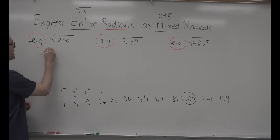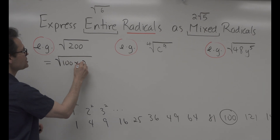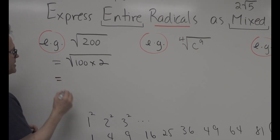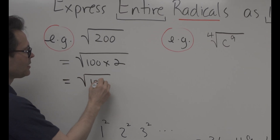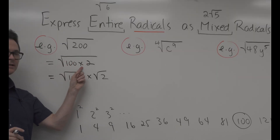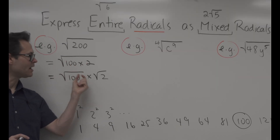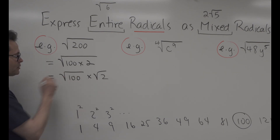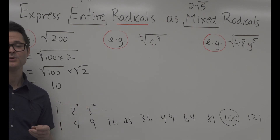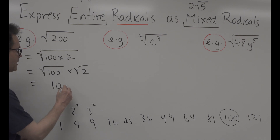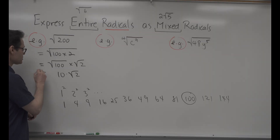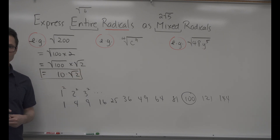You can pull radicals apart when they are being multiplied. So √(100 × 2) becomes √100 times √2. The square root of 100 is 10, and the square root of 2 stays as √2 because you'd need a decimal approximation. There's a times that binds those together, so the final answer is 10√2.